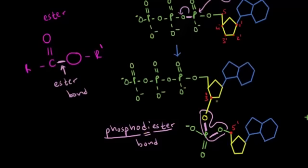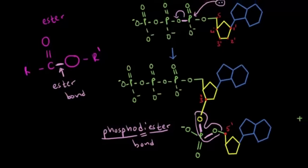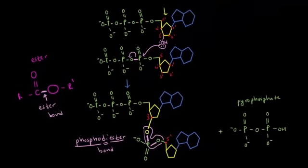The phosphodiester bond is what connects two nucleotides to each other. If we were to put together about 10 to 20 nucleotides, that would be called an oligonucleotide. But if we put together a couple of hundred or thousands of nucleotides, that would be called a polynucleotide.